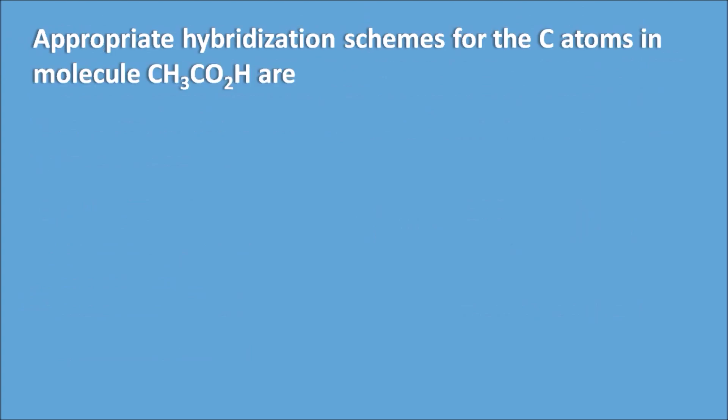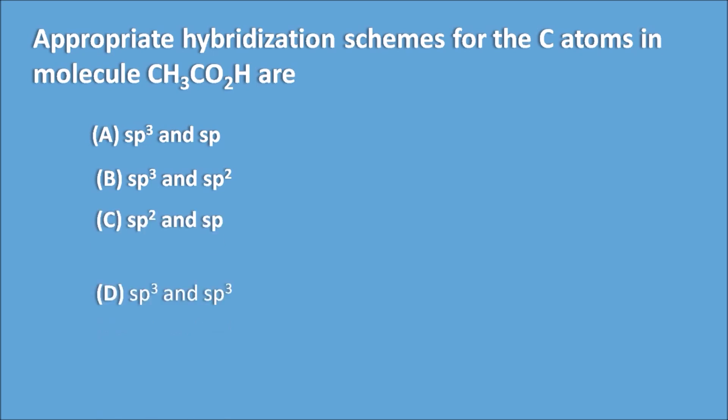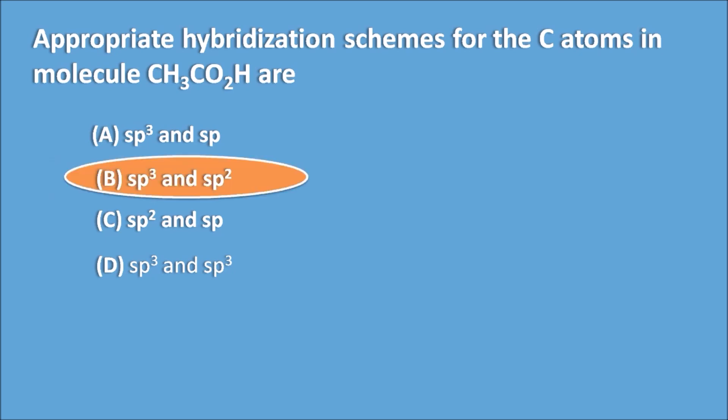Appropriate hybridization schemes for the carbon atoms in CH₃COOH are: A: SP3 and SP, B: SP3 and SP2, C: SP2 and SP, D: SP3 and SP. The right answer is B — SP3 and SP2. The CH₃ carbon is SP3 hybridized and the carbonyl carbon is SP2 hybridized. Applying the logic, you can identify which carbon has which hybridization.